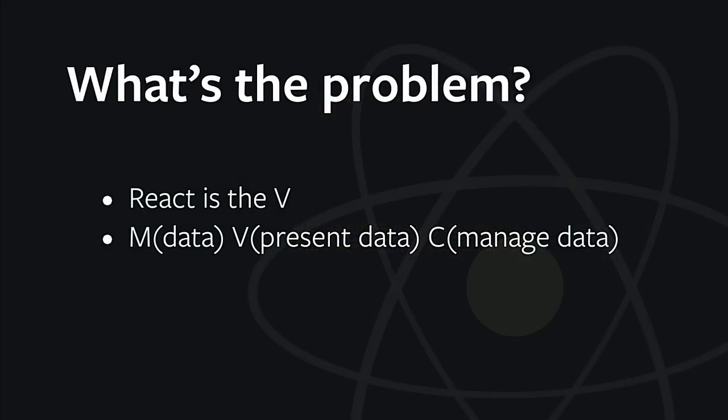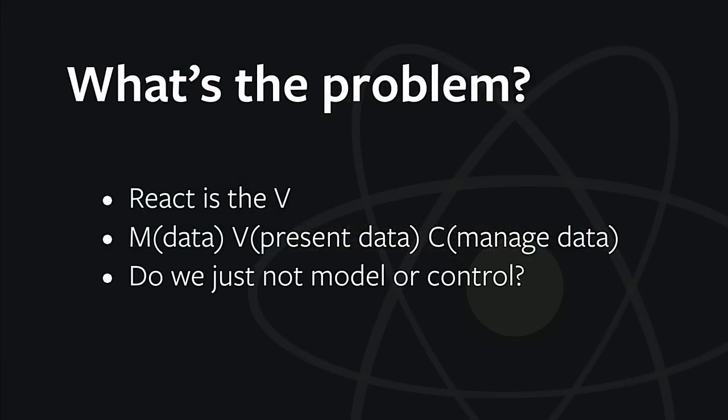So first, why is this a problem? Why is there even the question of how to manage app state in React? Well, when React came out, it was the V in MVC — it's just a library, it's not a framework. And we're familiar with MVC: you've got data, a way to present the data, and a way to manage the data. And we can't just not have the model or controller.